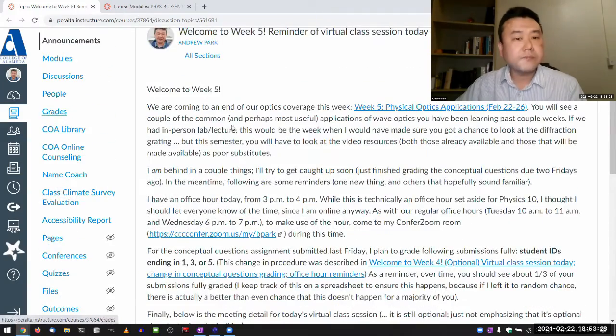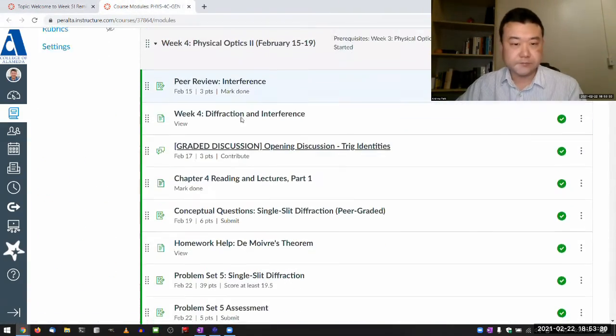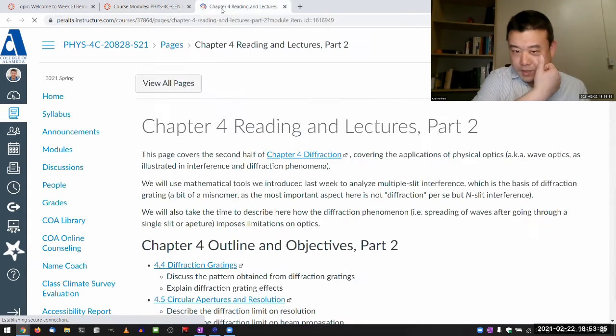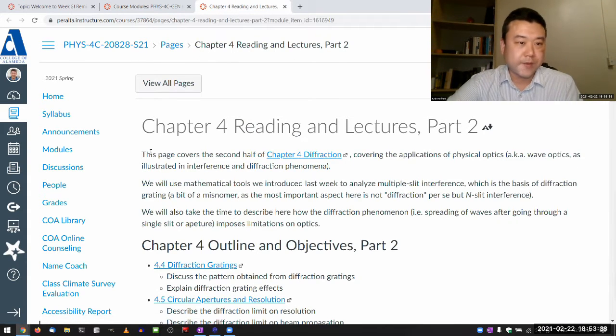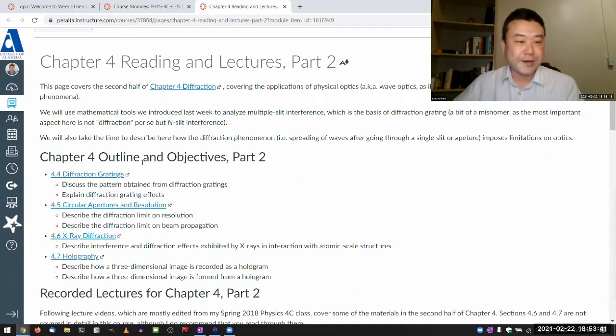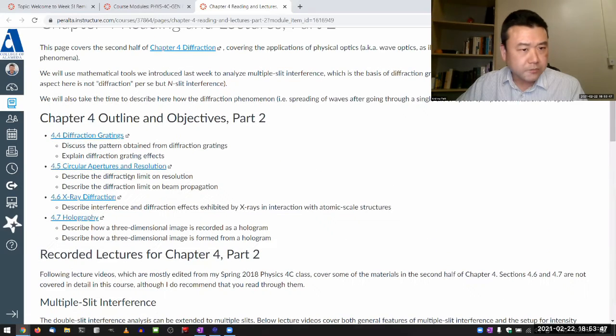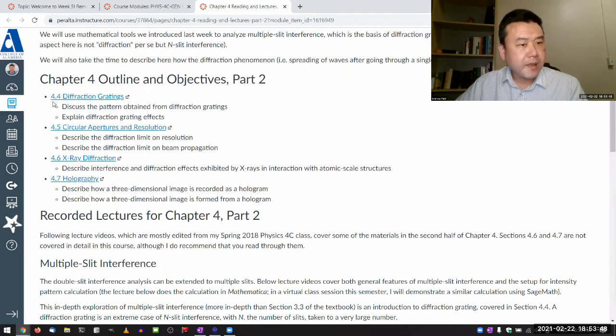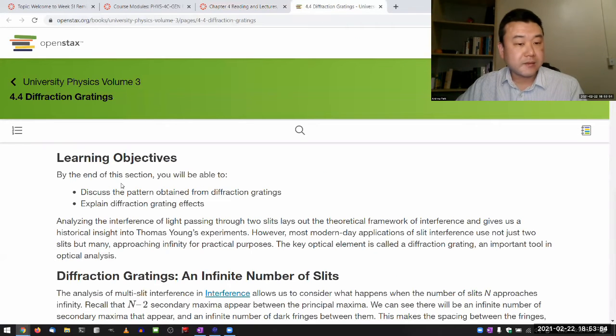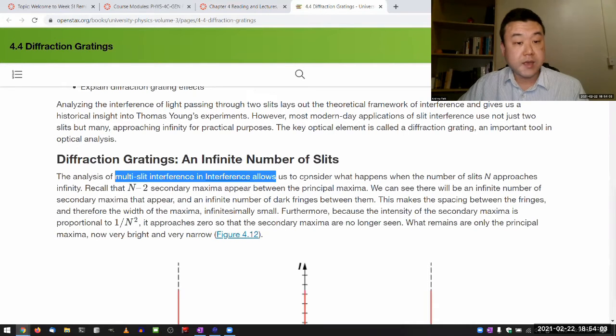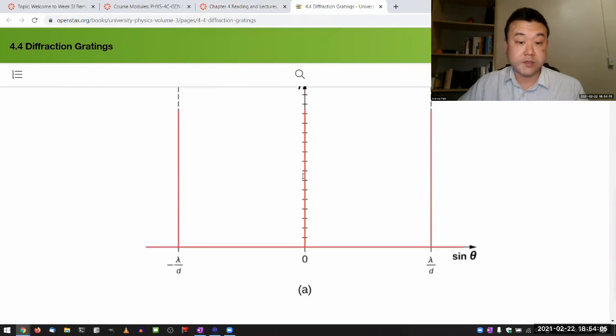So chapter four, overview part two, is covered here. This is where the lecture approach and textbook approach kind of go back to agreeing with each other. Maybe the biggest difference is in your textbook they put this coverage of diffraction grating in chapter four. Technically, a diffraction grating is an example of multi-slit interference, and that was covered in chapter three.